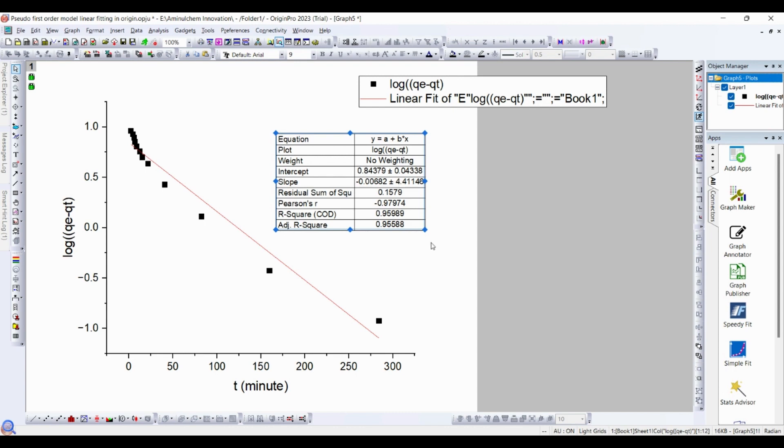This is how we can easily fit pseudo-first-order kinetic model using Origin Pro. And after some modification you can make it publication quality. Thanks for watching. See you soon.